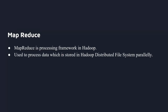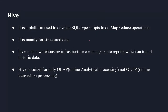MapReduce is a parallel processing framework. If we have distributed data in Hadoop, MapReduce processes it in parallel. However, there are drawbacks: if you have data in a database like Oracle or MySQL, and you want to query it, you have to write a Java application to get the data via MapReduce.